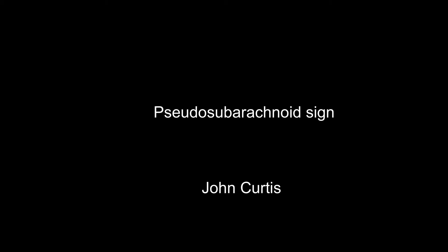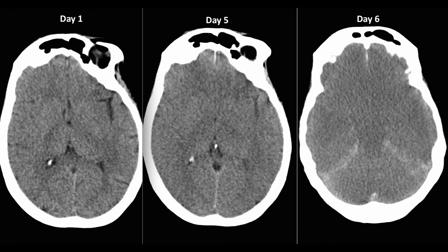The pseudo-subarachnoid sign. This is a patient who presented with a GCS of about six and felt drowsy and lethargic. Over the subsequent four days the GCS dropped to three, and by day six the patient was comatose. Since day one you can see the sulci and the sylvian fissure, but the brain has become very swollen with sulcal effacement. By day six the brain is globally of low attenuation with increased density along the tentorium and around the sinus. This is global anoxia and is causing the pseudo-subarachnoid sign.